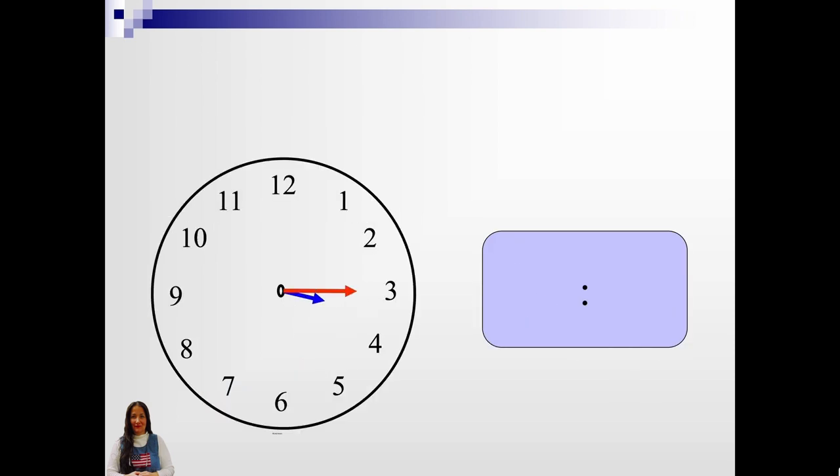Here's your digital clock. And here's your analog clock. What time is it? 3 o'clock. I put the hours in blue so you can see. And I put the minutes in red on the digital clock. It's on the 3. So it's 3.